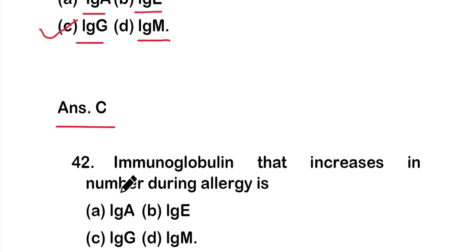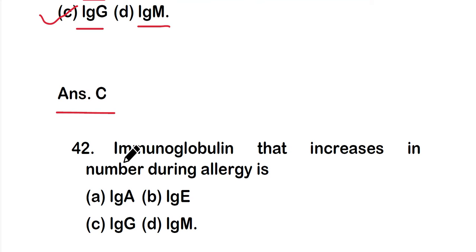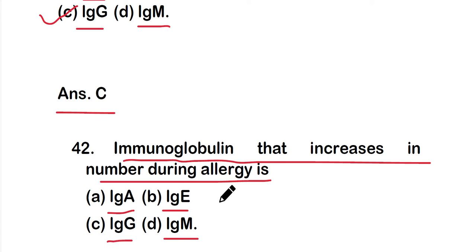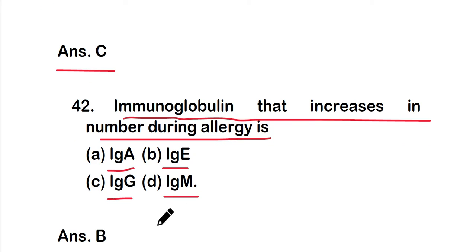Question 42: Immunoglobulin that increases in number during allergy is option A IgA, option B IgE, option C IgG, or option D IgM. The right answer is option B — IgE antibody increases in number during an allergy reaction.